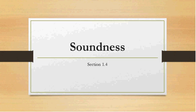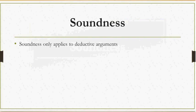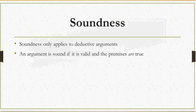The first important thing to note is that soundness only applies to deductive arguments. Here's the definition: an argument is sound if it is valid and the premises are true. You can think of these two things as necessary conditions — you need both for the argument to be sound. You need it to be valid and you need the premises to be true.